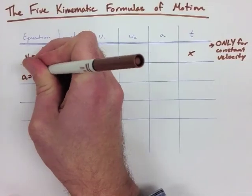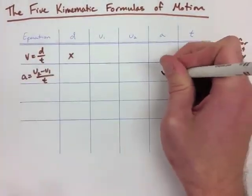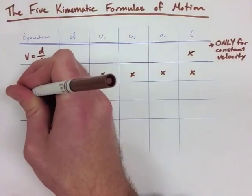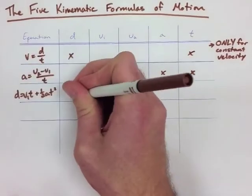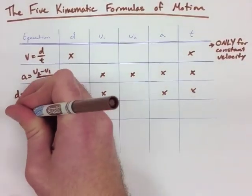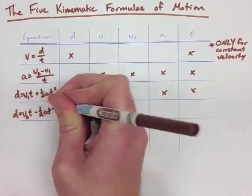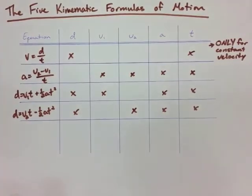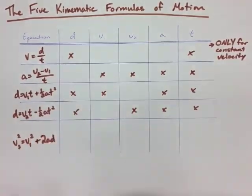The second equation is A equals V2 minus V1 over T. It contains everything except for displacement. The third equation is D equals V1T plus one-half AT squared. It doesn't contain V2. The next equation does contain V2, but not V1, being D equals V2T minus one-half AT squared.